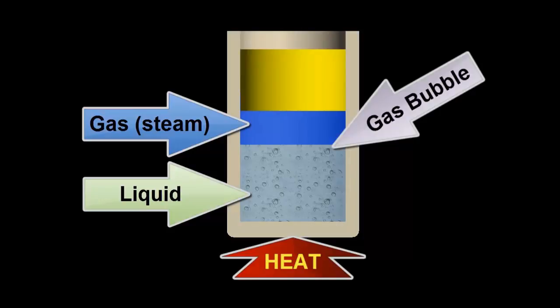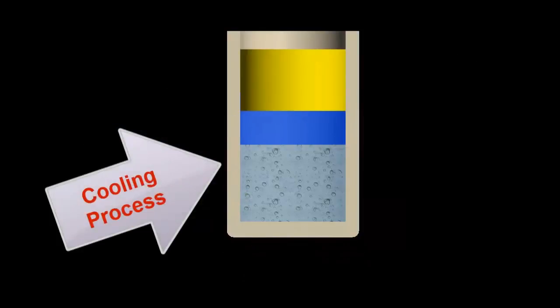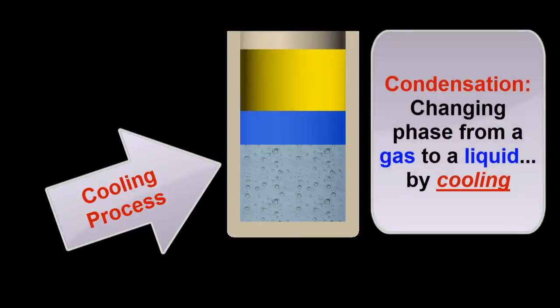In the next step of the animation, I'll turn off the heat to allow the water to cool. Notice that, as this happens, the gas bubbles will return to their liquid state. This process of changing phase from a gas to a liquid by cooling is known as condensation. Let's resume the animation and watch what happens.